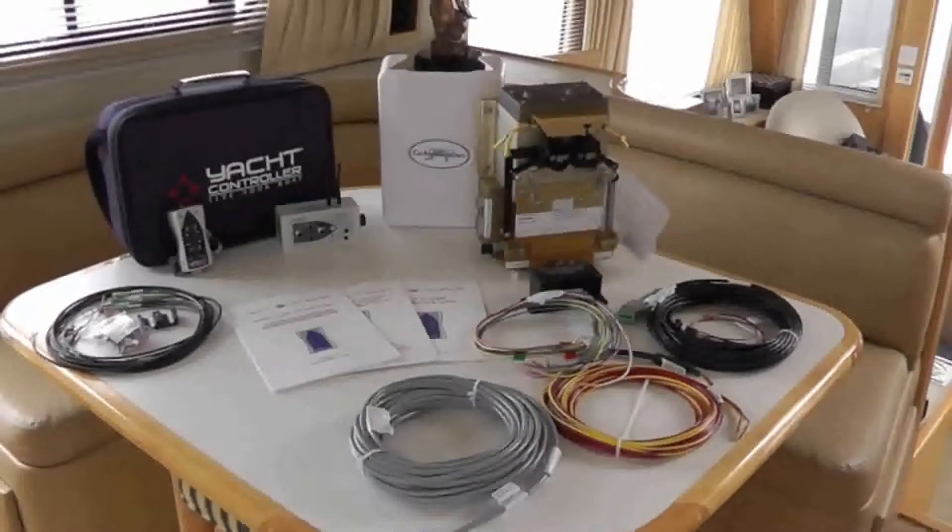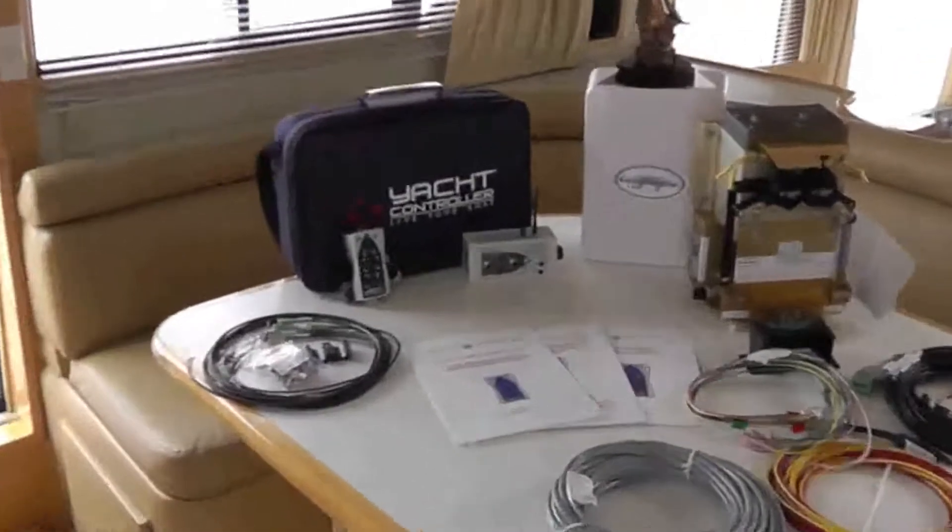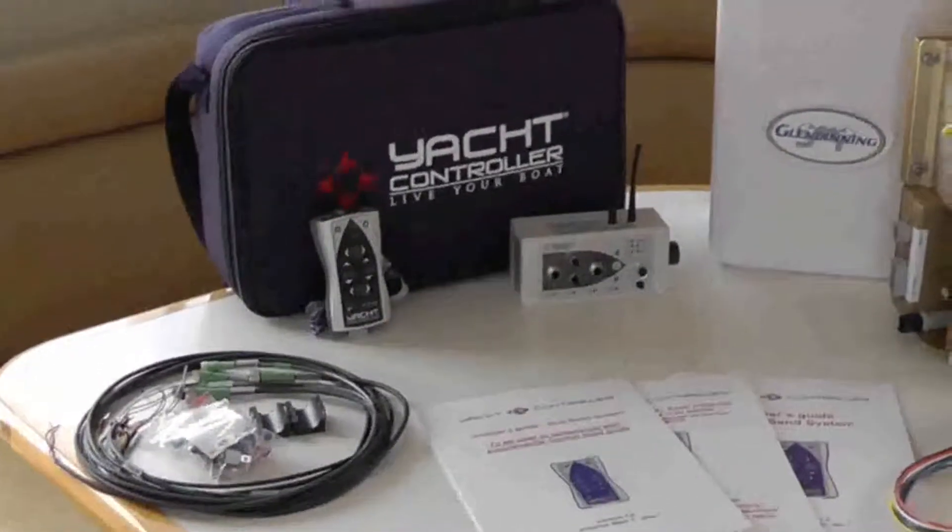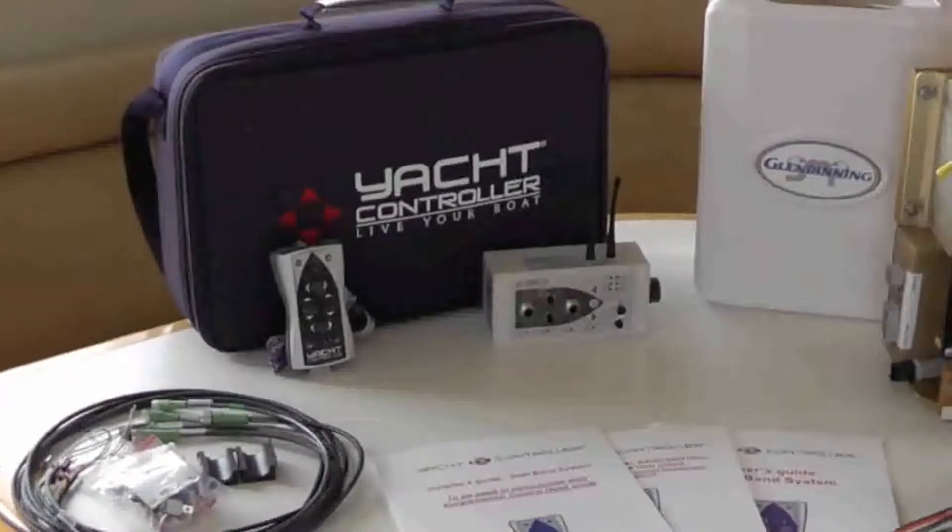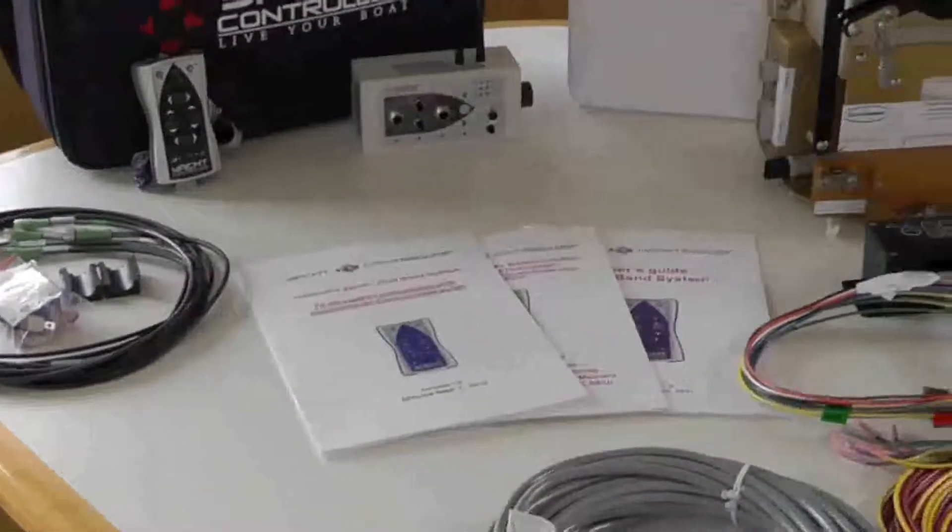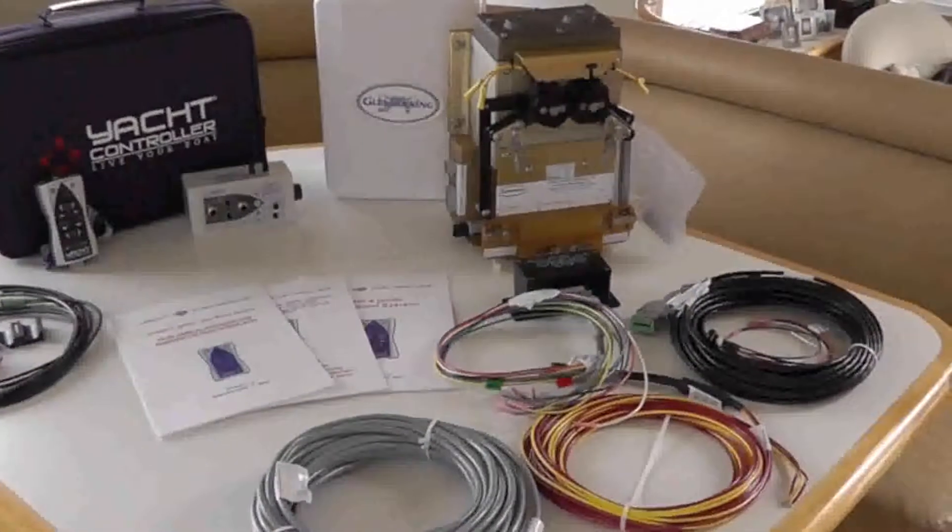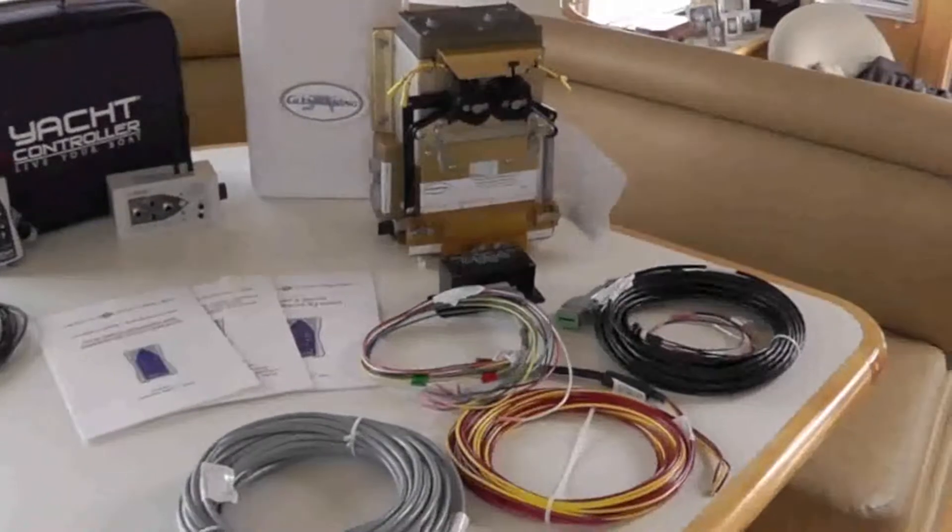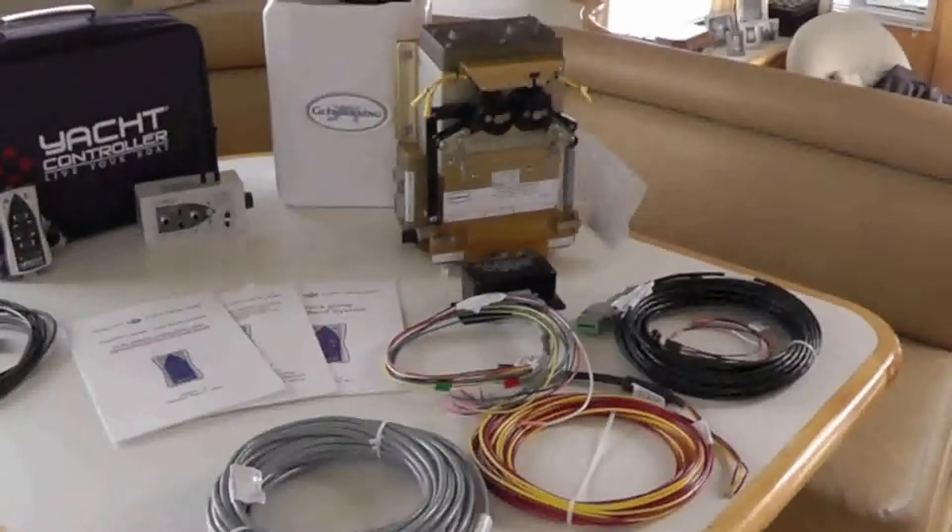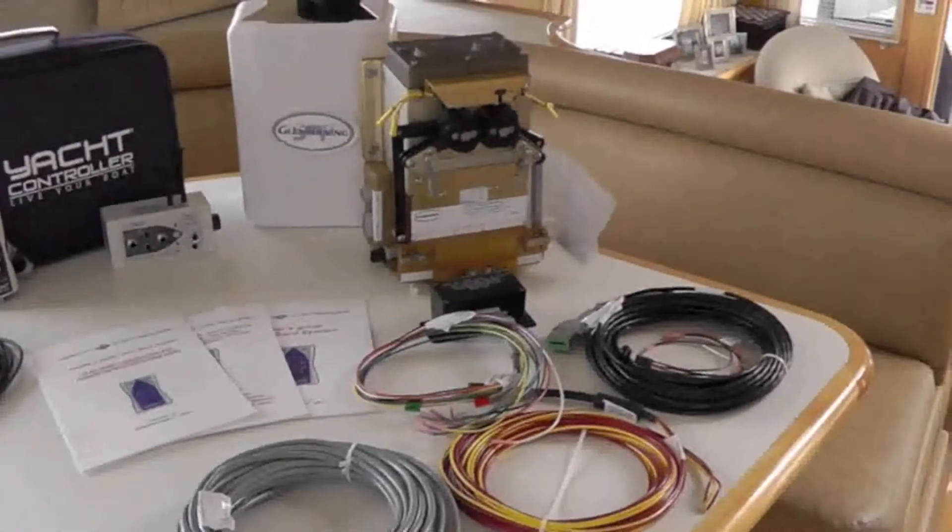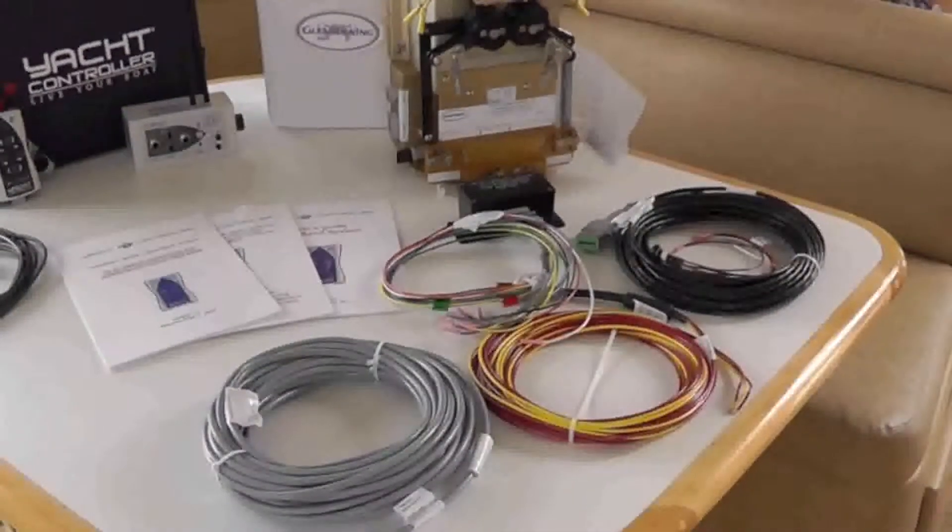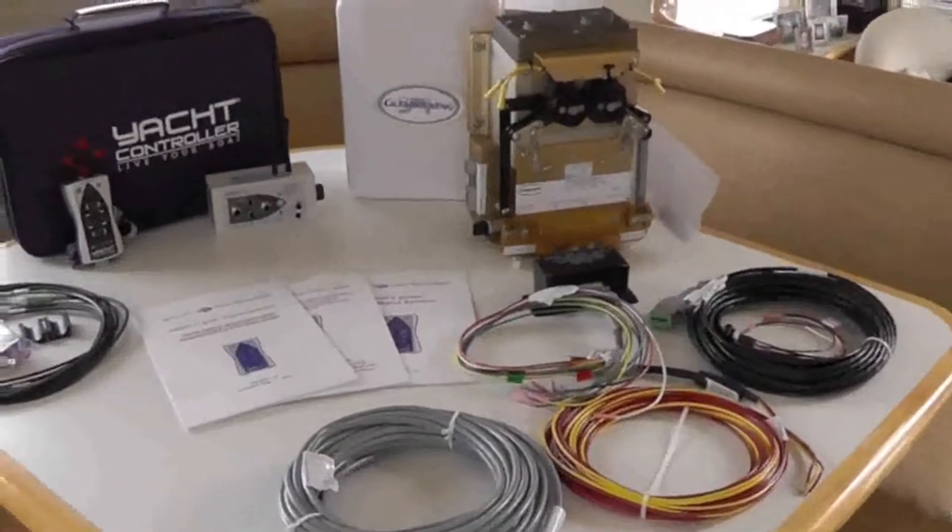Here we have the yacht controller and the Yamas system. On your left you're going to see the standard pieces of equipment that come with the yacht controller. Starting from left to right you have the wiring harnesses. You can see the handheld transmitter in the middle and the receiver that goes behind the dash on the right. Down below we have some instruction manuals and over here on the right you can see the Glendanning Yamas portion of the system. We have a very large gold-colored box that actually takes the electronic signals from the yacht controller and turns them into a mechanical rotational movement. It actually grabs a hold of a standard shifter cable and will put the engines in and out of gear.